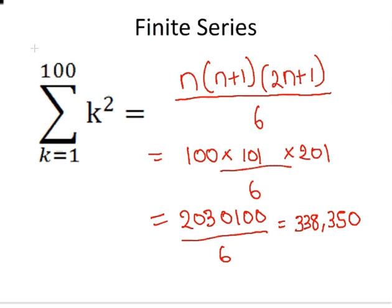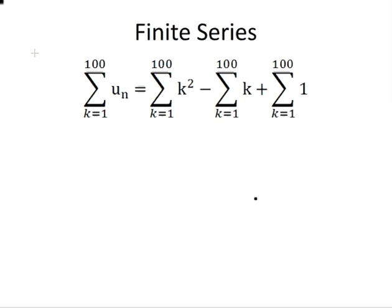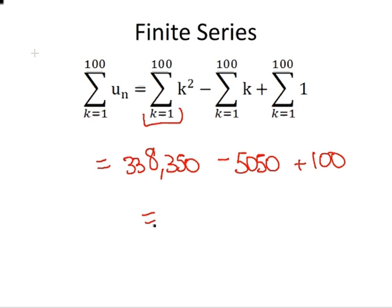So let's put this all together. We know this to be 338350 minus 5050 plus 100. So the overall answer is 333400. That is the sum of the first hundred terms defined by that sequence.